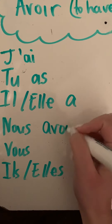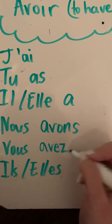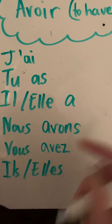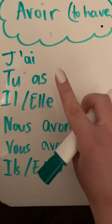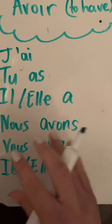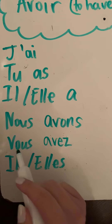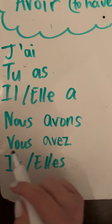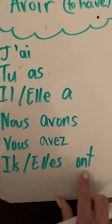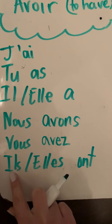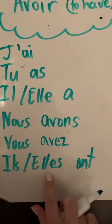Nous avons means 'we have.' Vous avez means 'you have.' The difference between tu as and vous avez: tu as is used when you're speaking to one person, une personne. And vous avez is used when you're speaking to many people. And the last one is ils ont, which means 'they have,' and elles ont, which also means 'they have.' But ils is used when it's a mixed group or all males, and elles is used when they're all females.